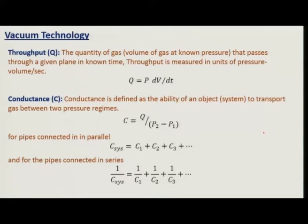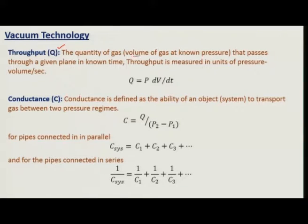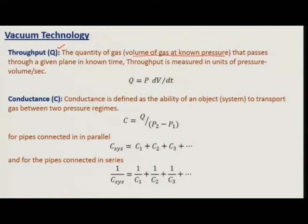Before we learn about different types of vacuum pumps, let me introduce some definitions. The first is throughput, Q. Throughput is defined as the quantity of gas — the volume of gas at known pressure — that passes through a given plane in known time. So if I am passing some gas through a plane in known time, how much gas has passed through is the throughput. This is defined as volume of gas at known pressure.